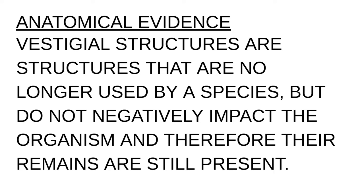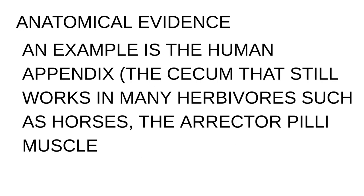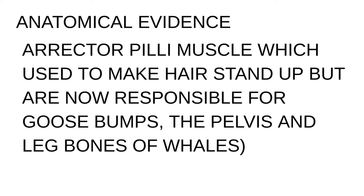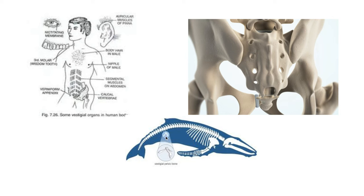Vestigial structures are those no longer used by a species, but they don't negatively impact the organism and therefore are still present. If a structure that's no longer used somehow harms the organism, natural selection will get rid of it. An example of a vestigial organ is the human appendix — it's a cecum that still works in herbivores, but because we're not herbivores any longer, we don't need it. Another example is the erector pili muscle, which is what makes you get goosebumps. The pelvis and leg bones of whales are also vestigial — still present but floating in there, not doing anything. And we have a tailbone.